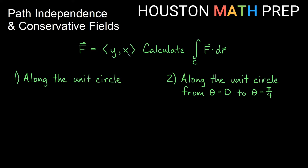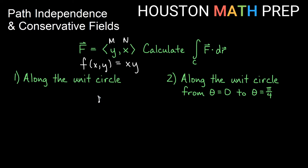Let's look at two examples keeping the same field (y, x). We already established this is a gradient field, path independent, with potential function f(x,y) = xy. First, say we want to calculate the work — the line integral of F·dr — along the entire unit circle. This is path independent and conservative. Since we're starting at a point, going all the way around the circle, and ending back where we started, that's a simple closed curve. So the integral of F·dr equals zero.